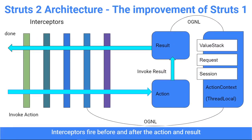This diagram shows the request processing workflow after the controller filter has been called. The stack of interceptors is invoked before and after the action — this is where cross-cutting concerns such as logging, data validation, or data transfer are performed. The value stack is a storage area for application data used during the processing of a request. OGNL is an expression language used for accessing and manipulating data on the value stack. The action context contains all the data of the action within the thread of execution, also known as thread local.